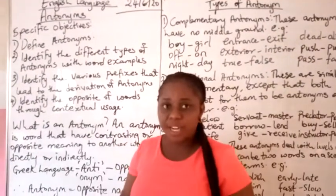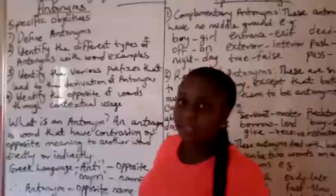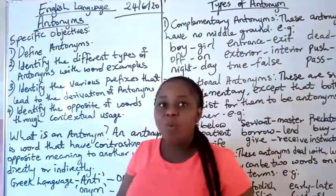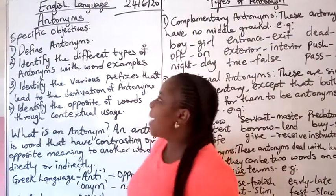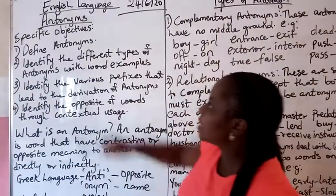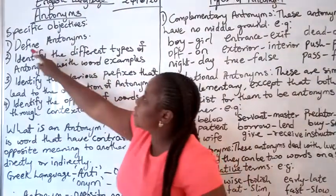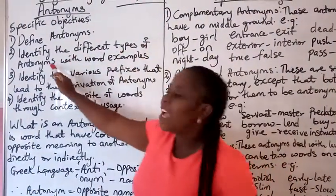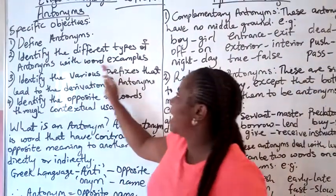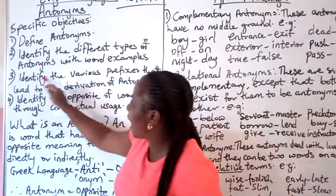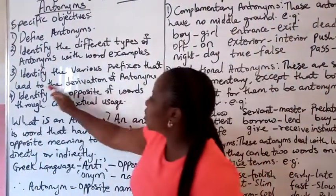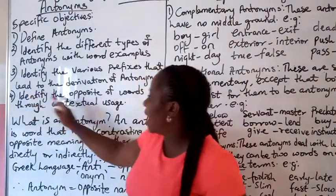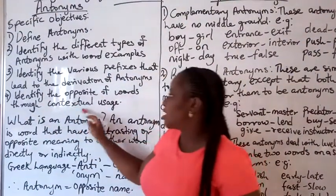Welcome to today's class on English language. In today's class, we are going to be treating antonyms. By the end of this class, the specific objectives include the ability to define antonyms, identify the different types of antonyms with word examples, identify the various prefixes that lead to the derivation of antonyms, and identify the opposite of words through contextual usage.